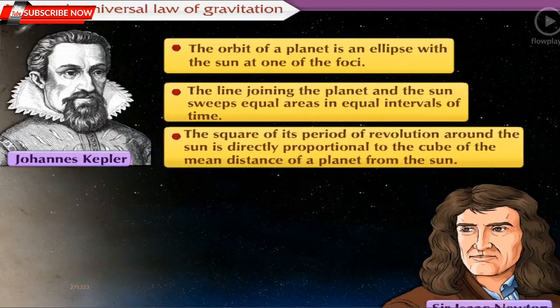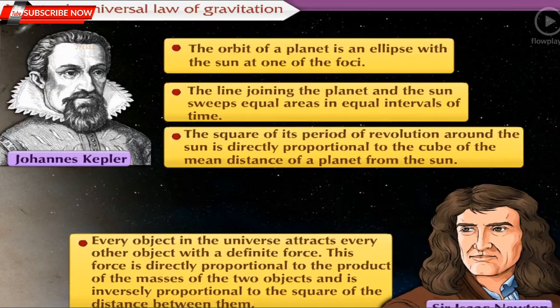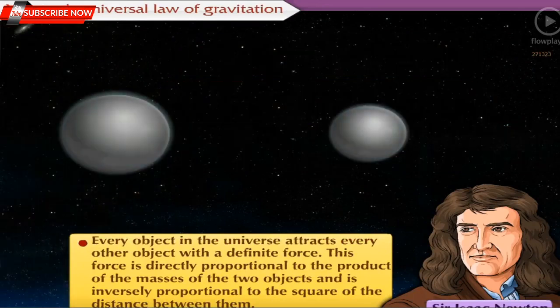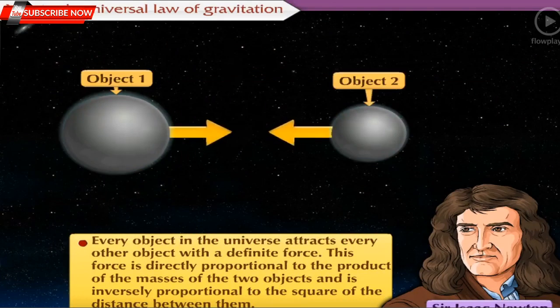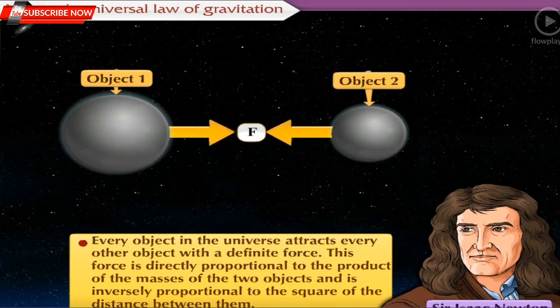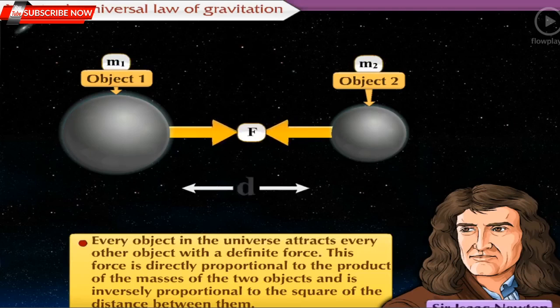Newton's Universal Law of Gravitation. Newton used Kepler's laws including all other observations and formulated his theory of universal gravity. According to this theory, every object in the universe attracts every other object with a definite force. This force is directly proportional to the product of the masses of the two objects and is inversely proportional to the square of the distance between them.